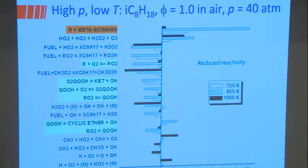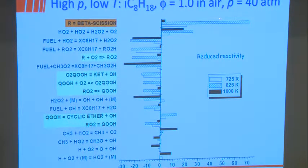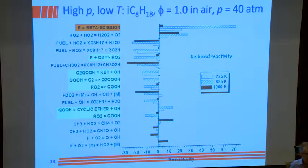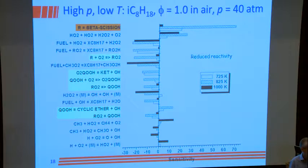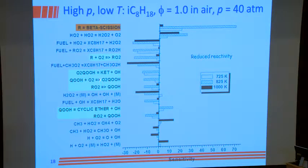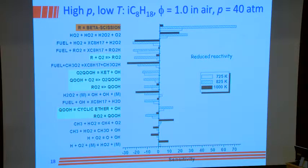For isooctane at this condition, the sensitivity analysis compared to yesterday's higher-temperature species chemistry now shows big influence of: fuel alkyl radical beta scission, alkyl radical addition to molecular oxygen, O2QOH decomposition to keto hydroxide plus OH, all low temperature fuel chemistry, and fuel plus OH. For highly branched alkanes, methyl radical chemistry and methyl peroxy chemistry can also be important. At 1000 Kelvin, H plus O2 plus M and H plus O2 giving O plus OH are starting to compete.